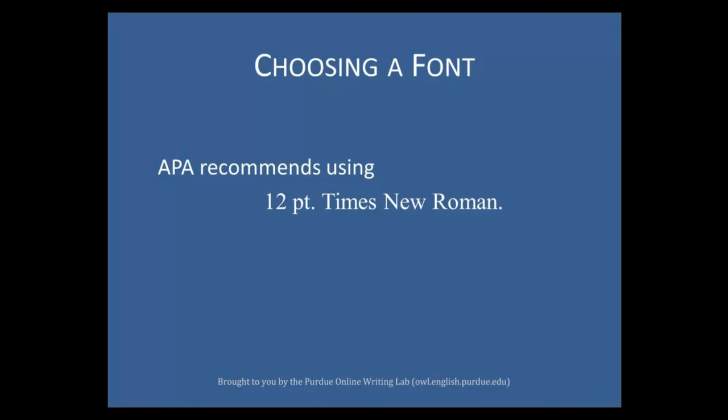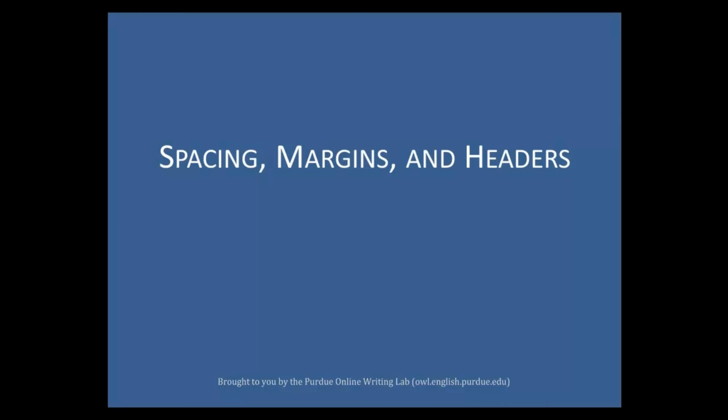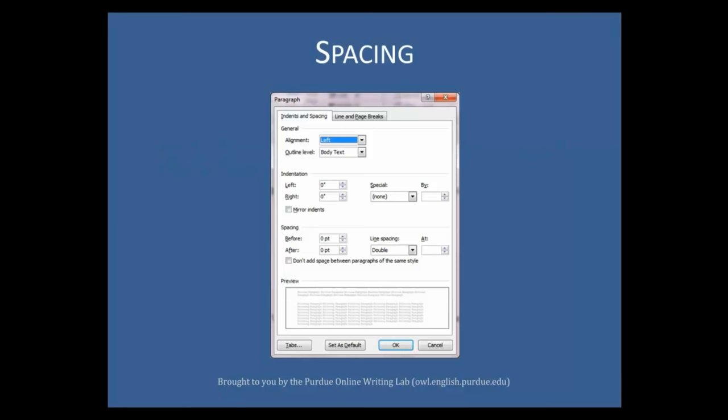Spacing, margins, and headers. APA requires all papers to be double spaced throughout. To set your line spacing to double space, open up the paragraph menu in Microsoft Word. Change the default line spacing setting from after 10 point to zero point, then change line spacing from multiple to double.